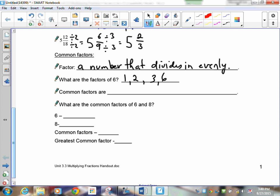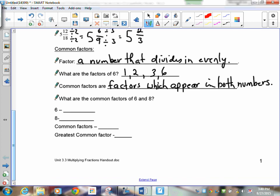Now, common factors are factors which appear in both numbers. They're common to both numbers. So, let's take a look of 6 and 8. We know the factors of 6 are 1, 2, 3, and 6. The factors of 8 are 1 and 8, and then 2 times 4. So, those are my factors of 8. Now, which ones are the common factors? Well, that means which ones are in both lists? Well, 1 is. 2 is. That's it. Which one of these is the greatest? That's 2.